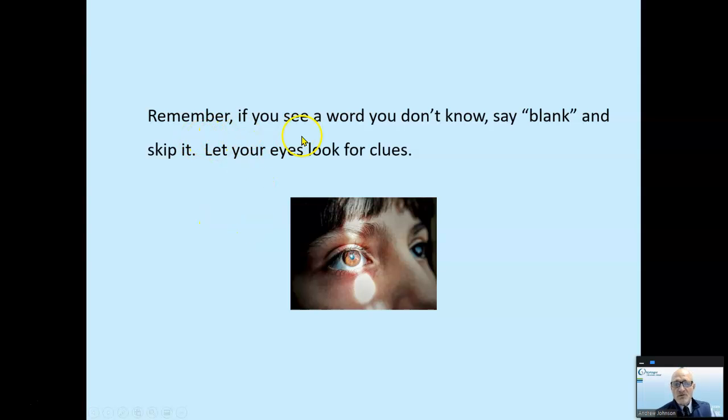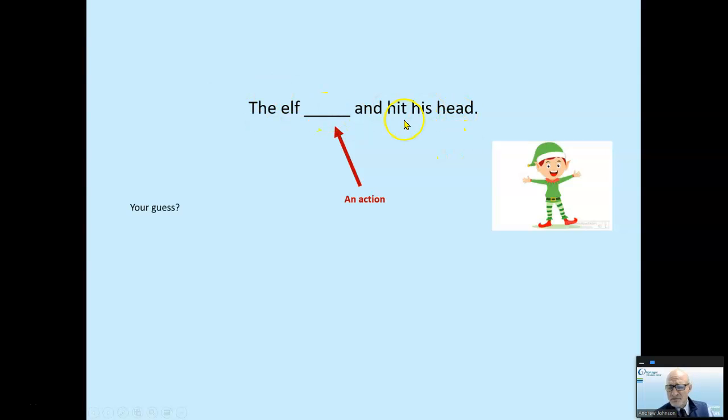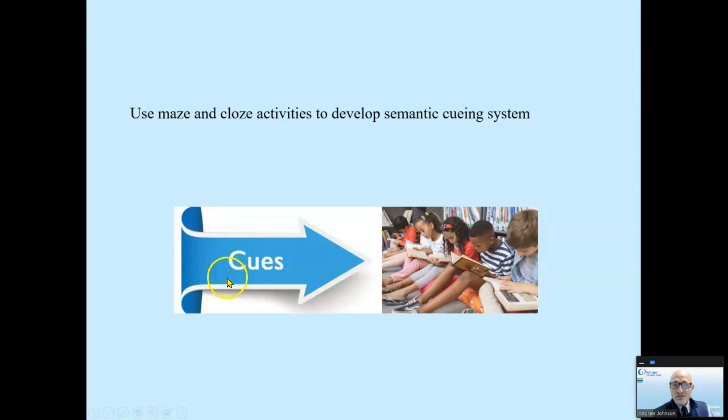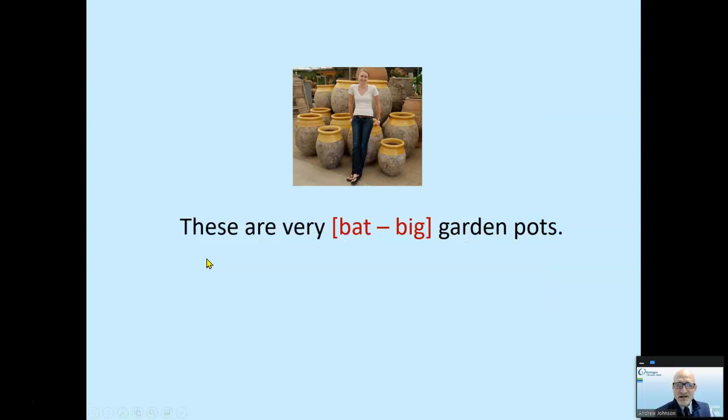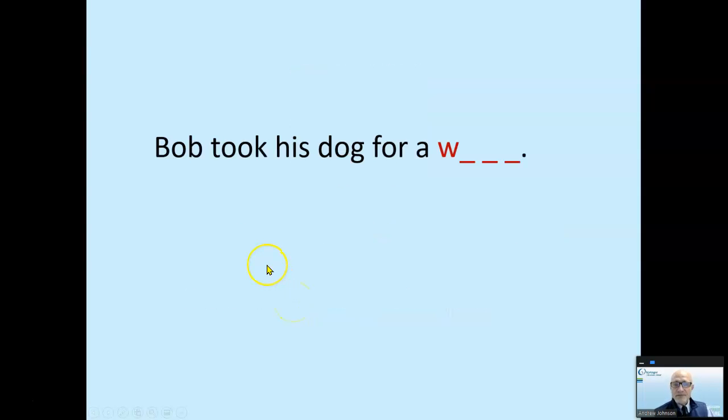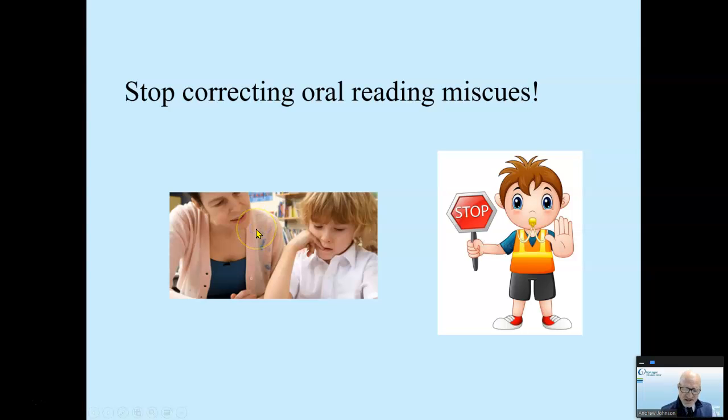This is what I would do. Remember, if you see a word you don't know, say blank and skip it. Let your eyes look for clues. The elf blank and hit its head. What are some clues, I'd say. What is your guess? And we would do these. We'd use cloze and maze activities. These are very blank garden pots. Yes. Only one of them makes sense. We would do, I would say, six to eight of these. It would take us four to six minutes at the most as we develop the semantic cueing system.